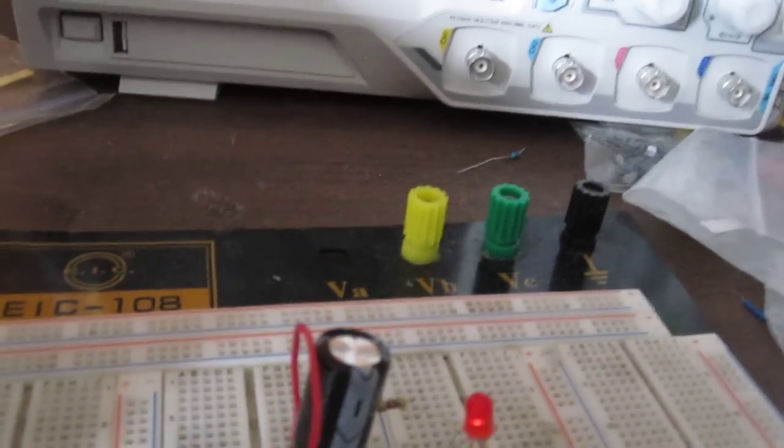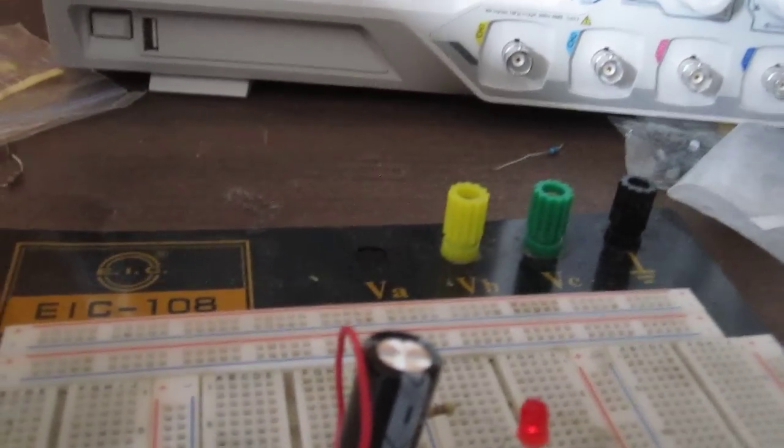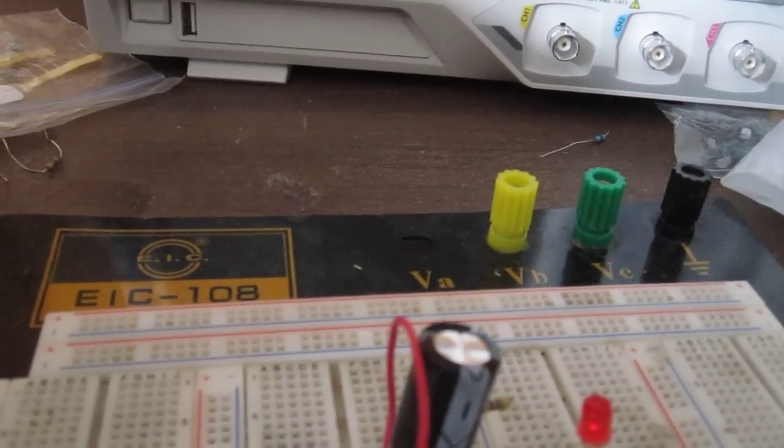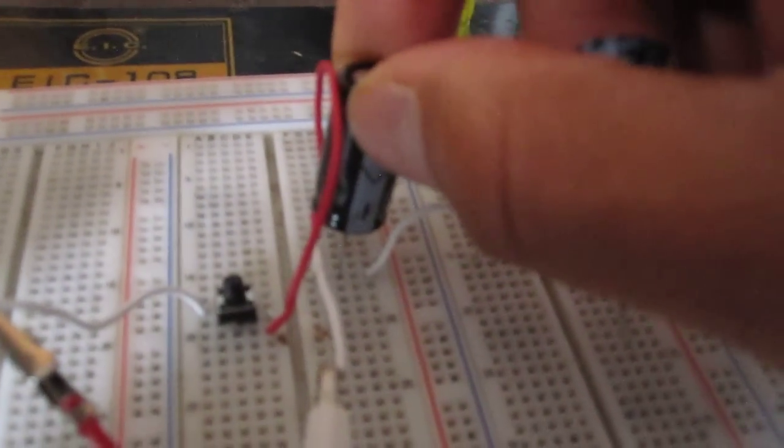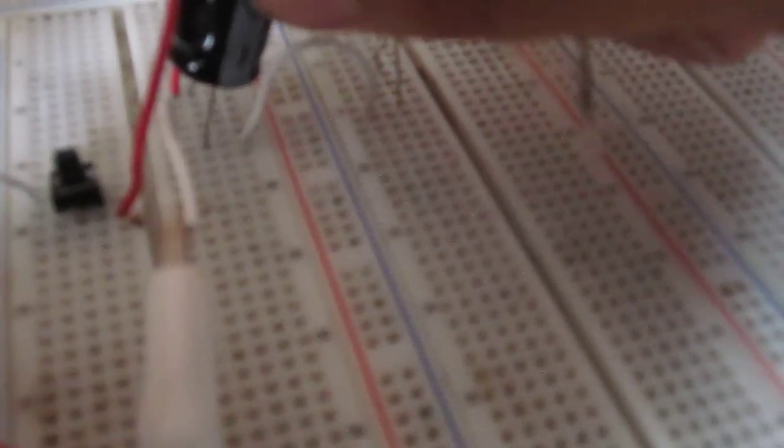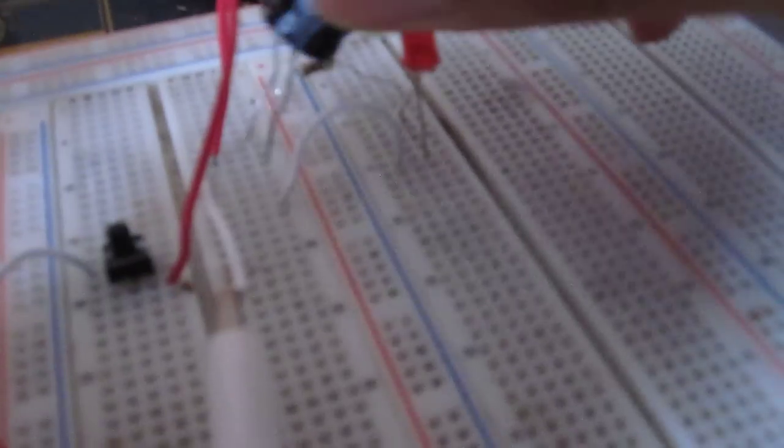This is a 1,000 microfarad capacitor. Now I'm going to demonstrate a 3,300 microfarad capacitor, so I'm going to remove this 1,000 microfarad capacitor and put this 3,300 microfarad capacitor. Now I'm going to put back on the power supply and the connections are good.